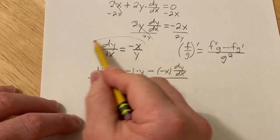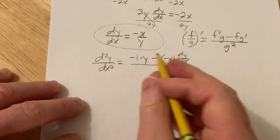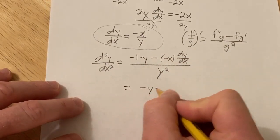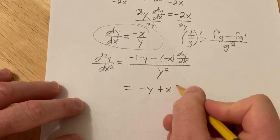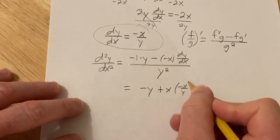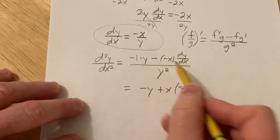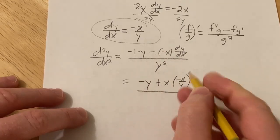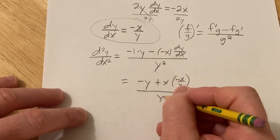But we know dy/dx. It's right here. So now we do plug it in. This is negative y plus x times negative x over y. The plus came about from the double negative there, over y squared.